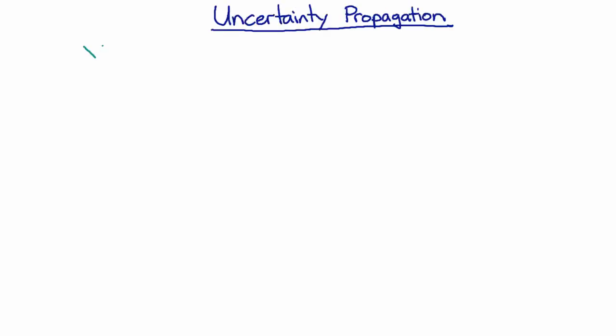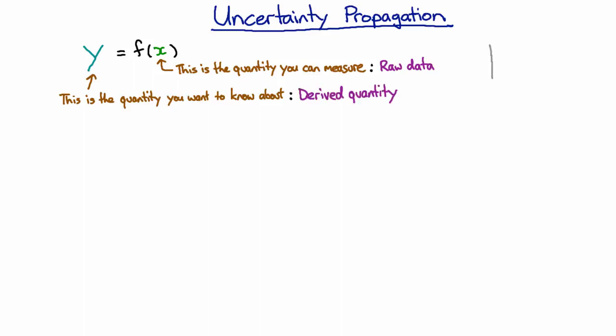Suppose there's some quantity you want to know about, but it's a function of some other variable, which is the variable that you can measure. My derived quantity is going to depend on the variable that I'm getting my raw data for.